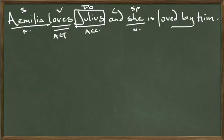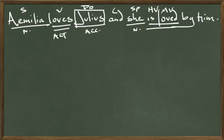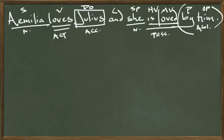We have a compound sentence, two sentences joined by a conjunction. Subject of the second sentence is 'she,' a pronoun in the nominative case. She is loved — 'loved' is the main verb, 'is' is a helping verb. Could we add the word 'being'? 'She is being loved by Julius' — yes, that works. So it's a passive verb. Julius is the agent: 'by' is a preposition, 'him' is the object of the preposition — ablative of agent, ablative case.